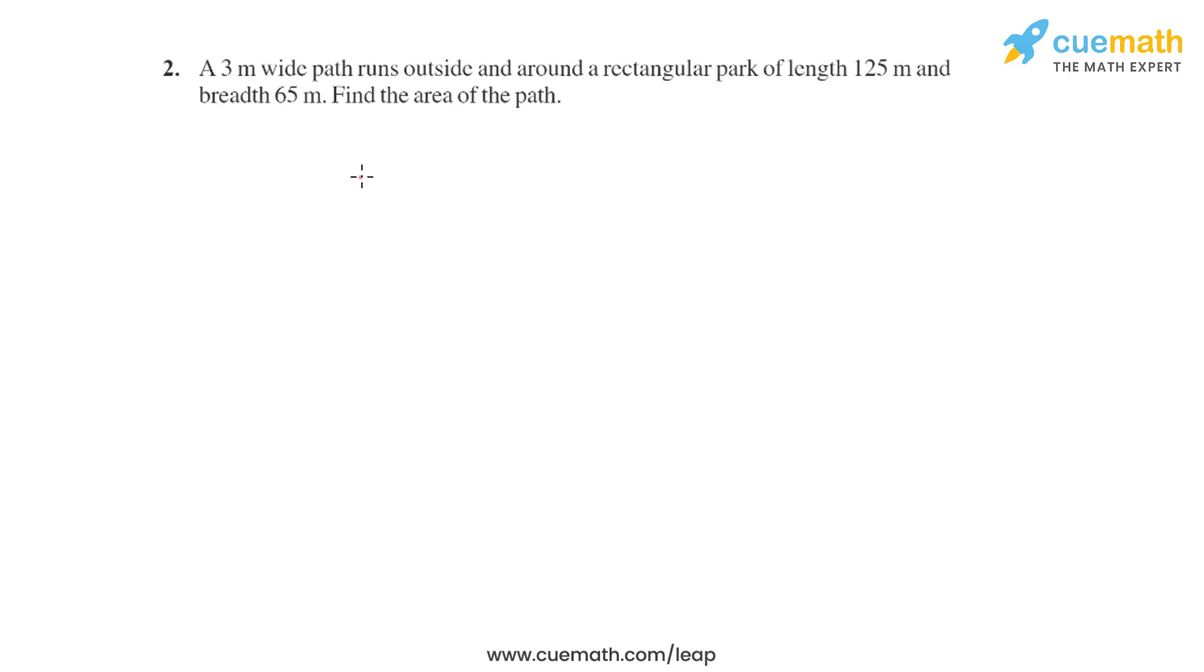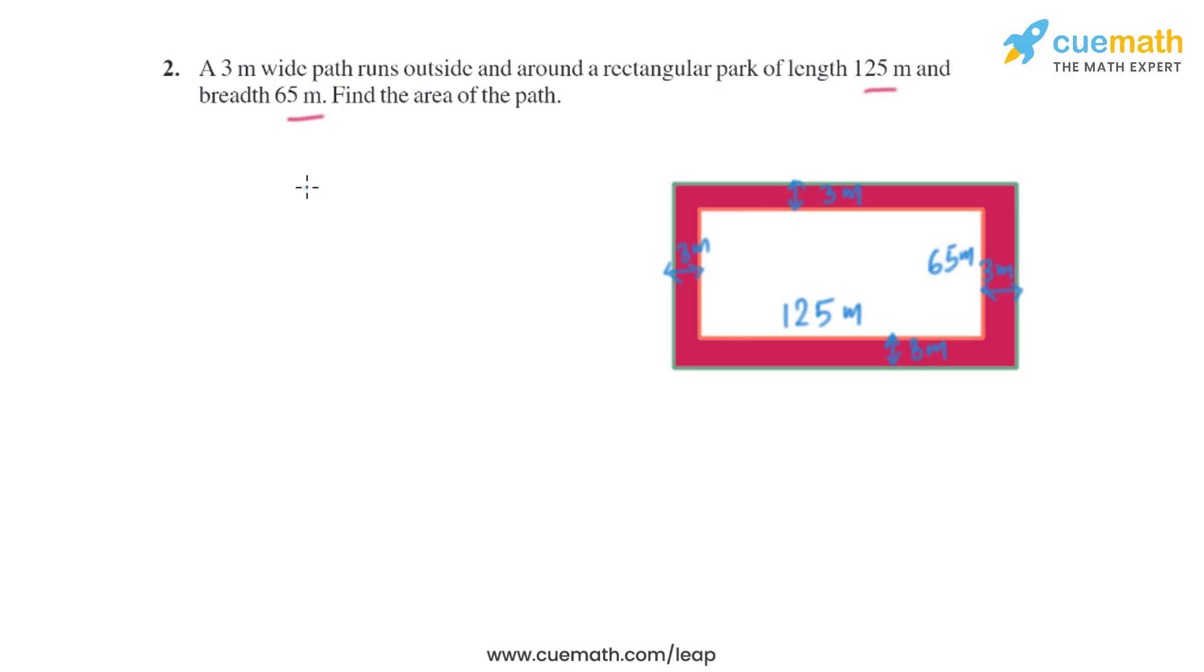Question 2 of this exercise says a 3 meter wide path runs outside and around a rectangular park of length 125 meter and breadth 65 meter. Find the area of the path. So the width of the path is uniform and it is around the rectangular park.